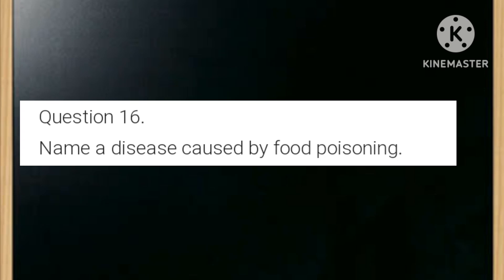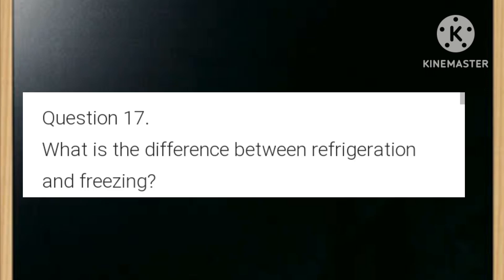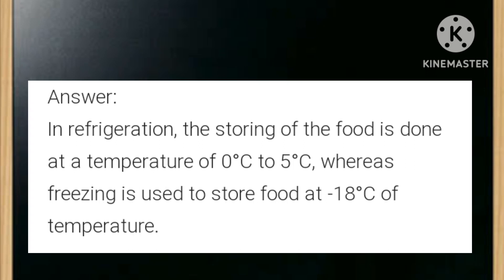Name a disease caused by food poisoning. Answer: botulism. What is the difference between refrigeration and freezing? In refrigeration, food is stored at 0 to 5 degrees centigrade, whereas freezing is used to store food at minus 18 degrees centigrade.